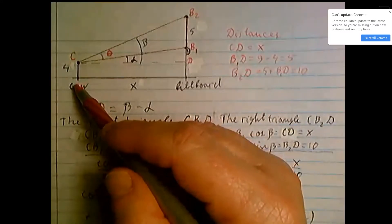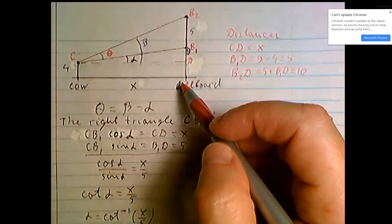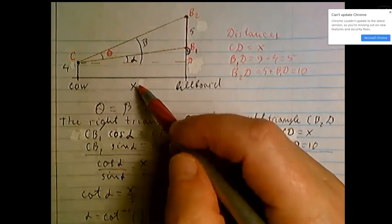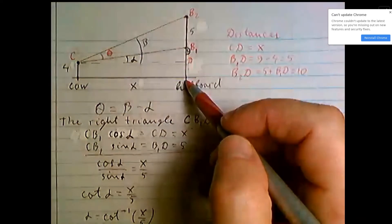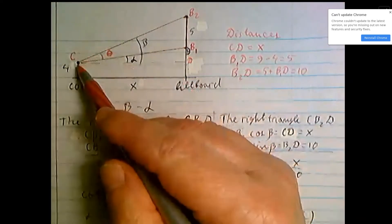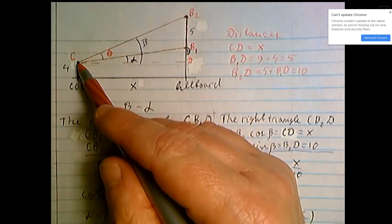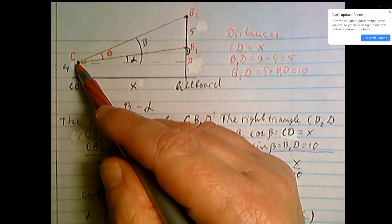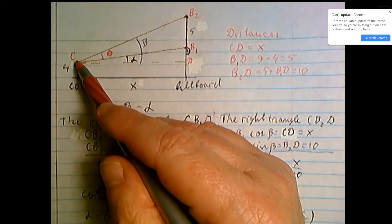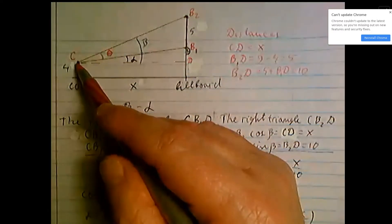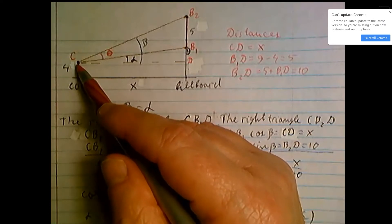Here is located the cow. The cow is x feet from the billboard, and then its eye level is 4 feet above the ground.